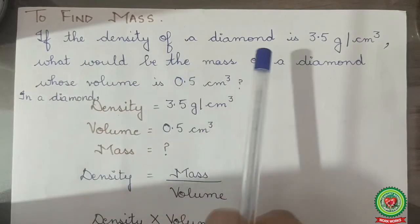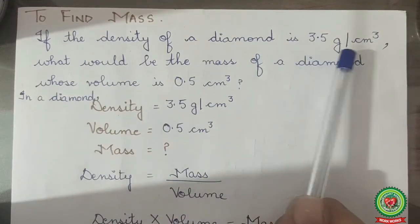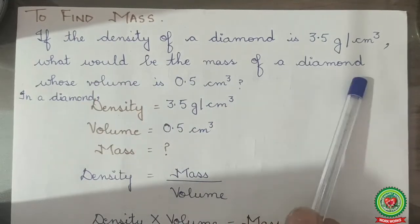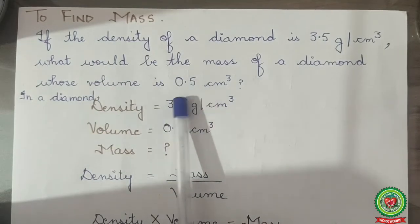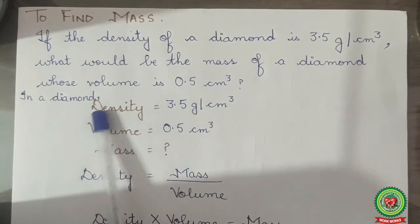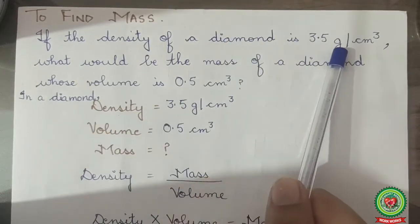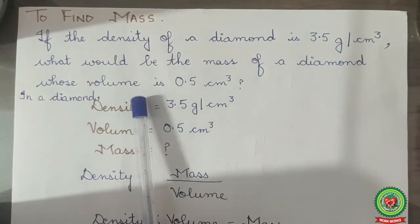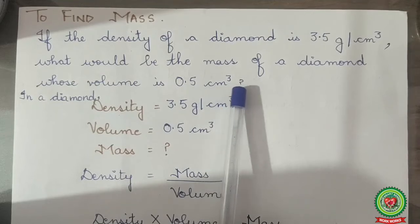If the density of a diamond is 3.5 gram per centimeter cube, what would be the mass of a diamond whose volume is 0.5 centimeter cube? It's given that density is 3.5 gram per centimeter cube and volume is 0.5 centimeter cube.